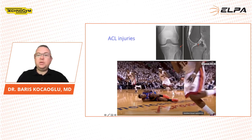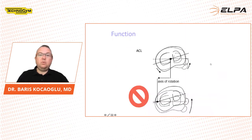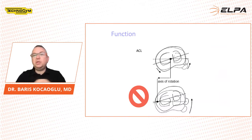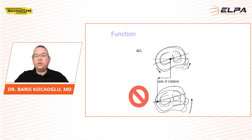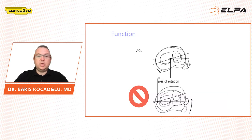Here is the MRI of the ACL injury. The anterior cruciate ligament is important for knee stability, mostly anterior and rotational stability. If we lose this ligament during a contact or non-contact trauma, the player could not continue his profession at the field because he or she can lose the stability of the knee joint.